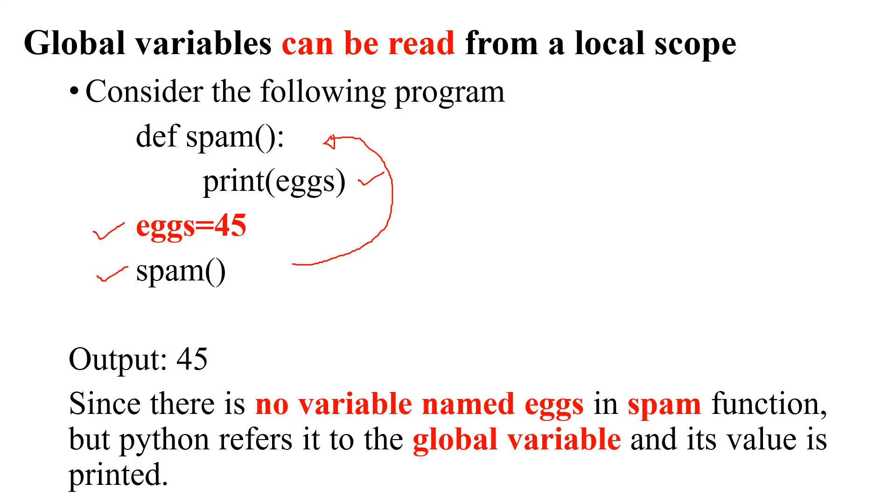Since there is no variable named x in the spam function, Python refers to the global variable and its value is printed. This is all about local scope and global scope, and we have also understood local variables and global variables.